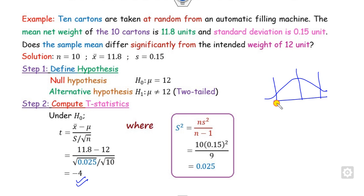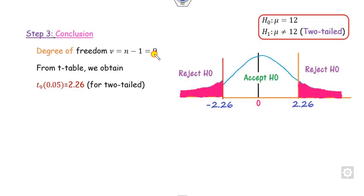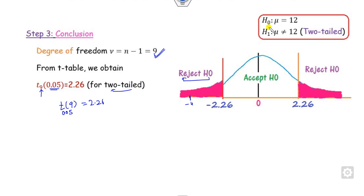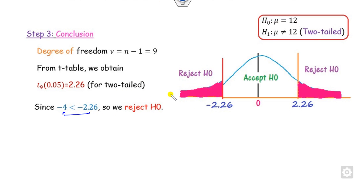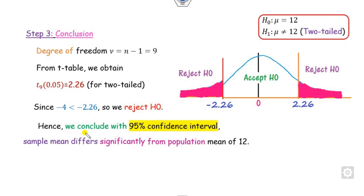Step three: since it is not equal to, this is a two-tail test. The level of significance is not given, so we assume 5%. Degree of freedom is n minus 1 = 9. From the t-table, the critical value for two-tail at 5% significance with 9 degrees of freedom is 2.26, placed on both sides. Our computed t = -4 lies in the rejection region. Therefore H0 is rejected and H1 is accepted. We conclude with 95% confidence that the sample mean differs significantly from 12.